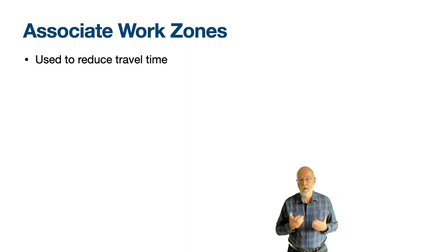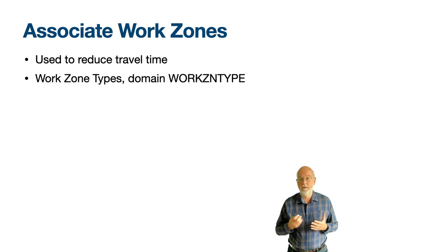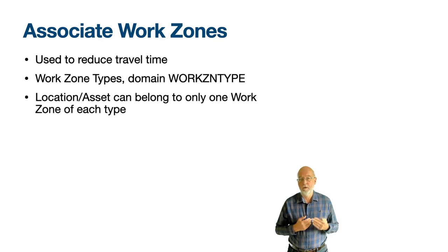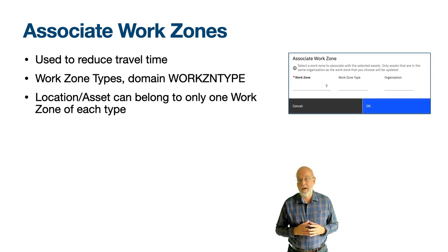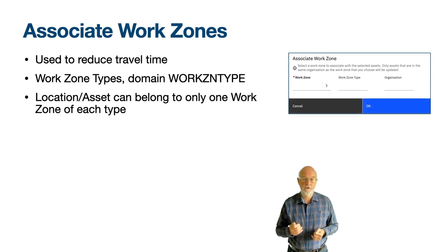The work zone type is an ALN domain called work ZN type. A location or asset can only reference one work zone for each work zone type, and this association is made from the work zones tab in the locations and assets application. A list tab action can make the association to multiple locations or assets.